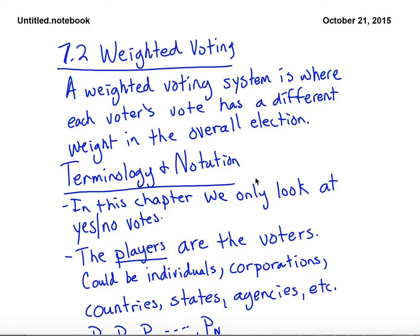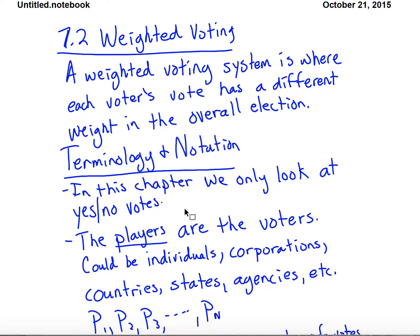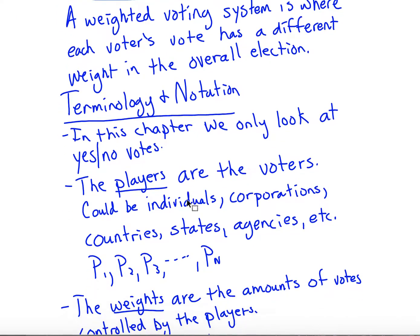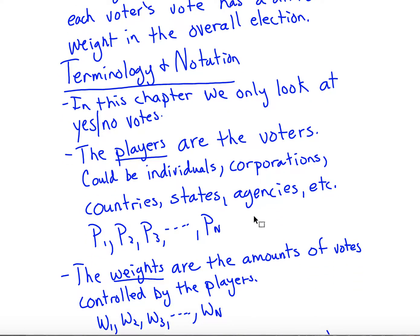In the UN, certain countries have more power or more weight than other countries. So there are different places where we see weighted voting systems happening. We are only going to be looking at yes and no votes — not preference ballots. We can see this in individuals, corporations, countries, states, and agencies. These are called the players.